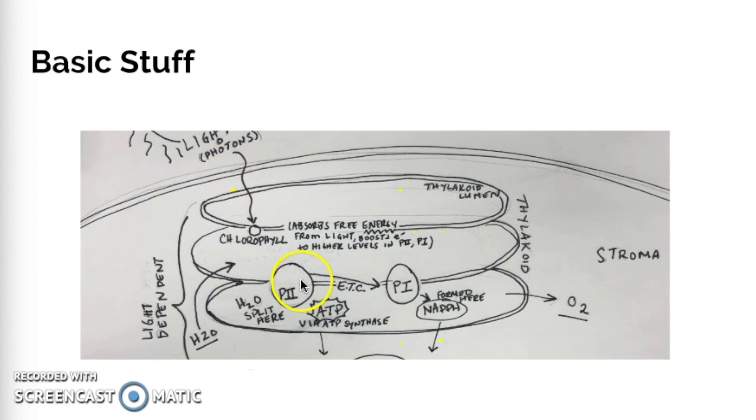We have light in the form of photons that are going to be absorbed in the chlorophyll. This absorbs the free energy from light, which boosts our electrons to higher levels in these two photosystems. Photosystems one and two are going to be embedded into the internal membranes of the chloroplasts, which are the thylakoid. Here's a thylakoid stack, and then these are the membranes here that they're embedded. And now we have an electron transport chain within these two photosystems as well.